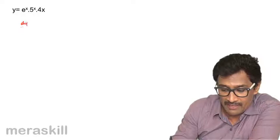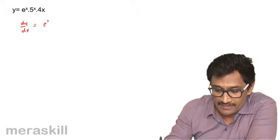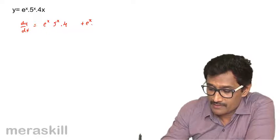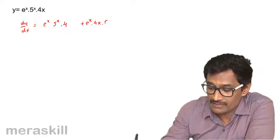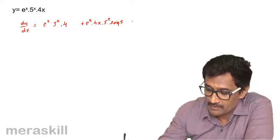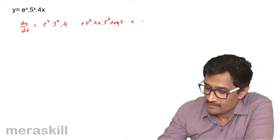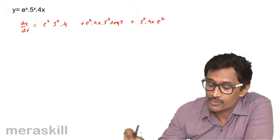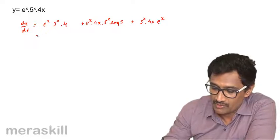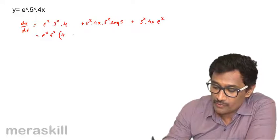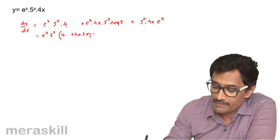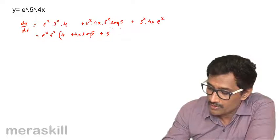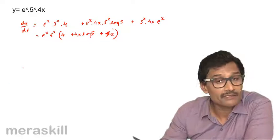Similarly, for y = e^x · π^x · 4x, dy/dx = e^x · π^x · (d/dx of 4x) + e^x · 4x · (d/dx of π^x) + π^x · 4x · (d/dx of e^x). This gives e^x · π^x · 4 + e^x · 4x · π^x · log π + π^x · 4x · e^x. Taking e^x · π^x common, we get 4 + 4x · log π + 4x.